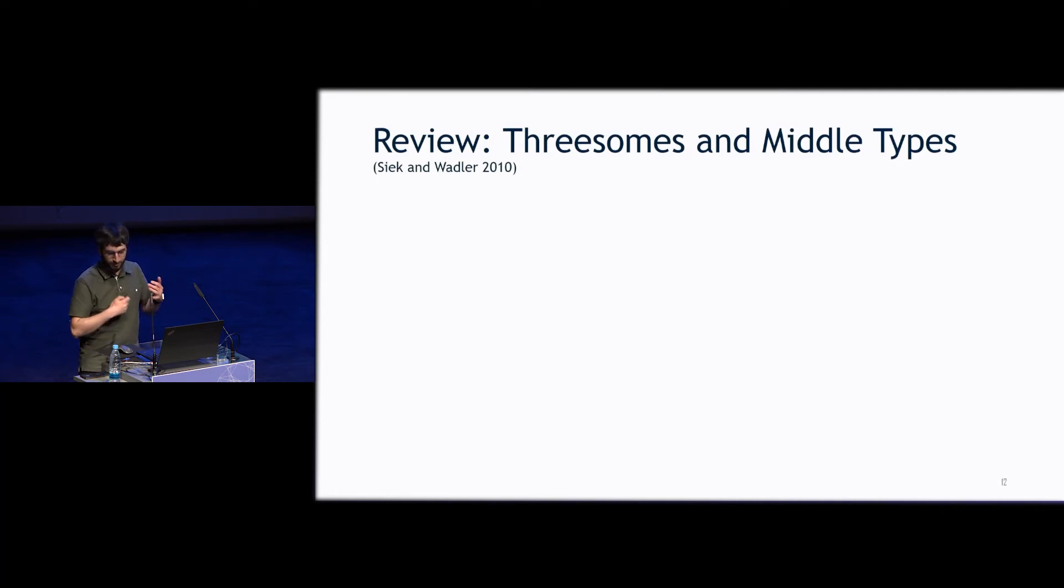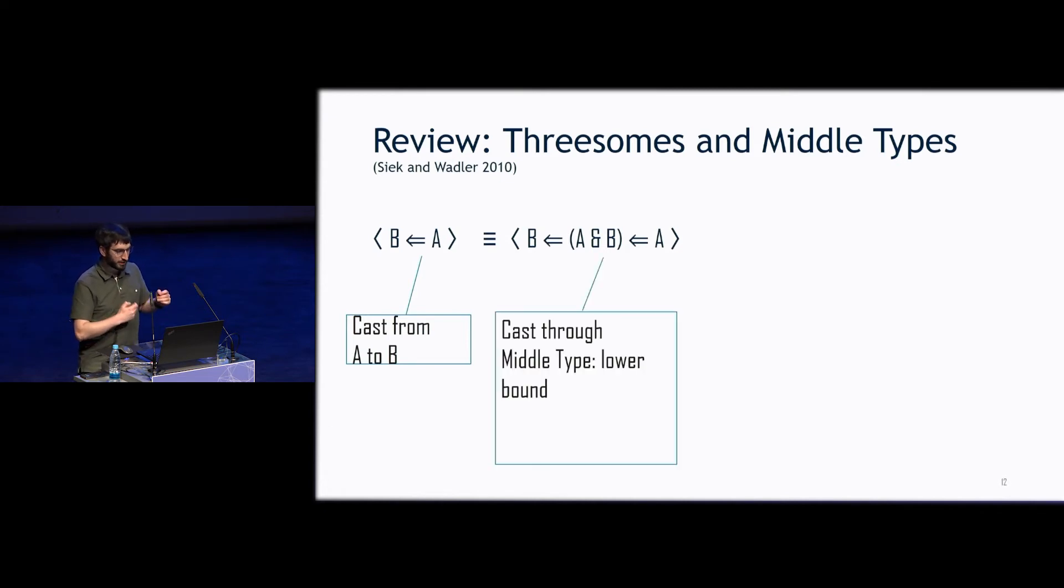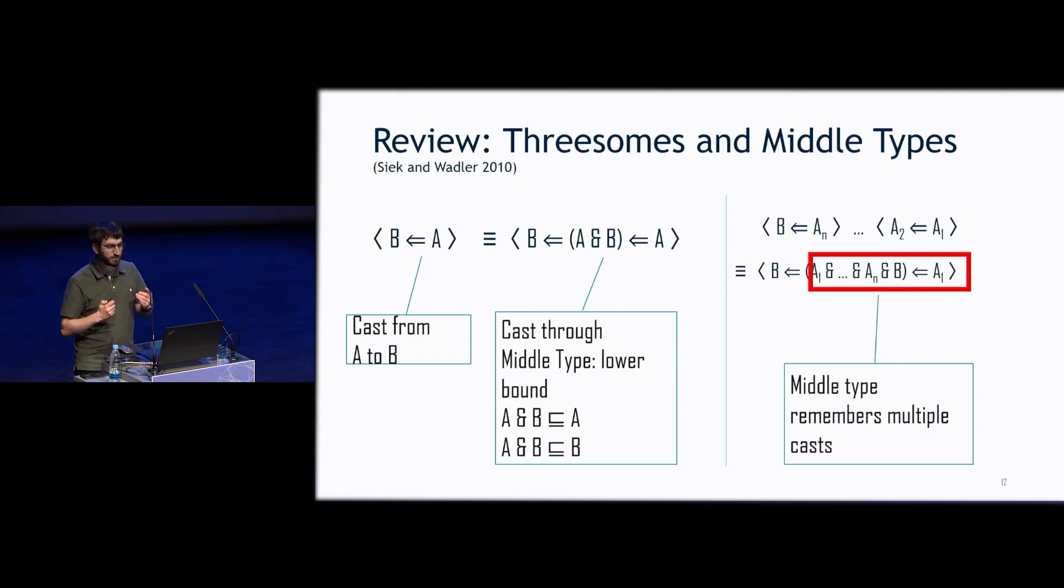These come from the non-dependent gradual type literature. So if we have a cast from a type A to a type B, the threesome approach says we view that cast as going through A compose B. And so that's called the middle type. And it's a precision lower bound for both A and B. So it's a type that is as precise as both of those types. But what's really useful about this middle type is it allows us to use a single type to collect a lot of information. So if we have a bunch of casts all happening in succession, we can now represent that as a single cast through a middle type, where that middle type is the composition of all of the different types we're casting through, including the final destination.